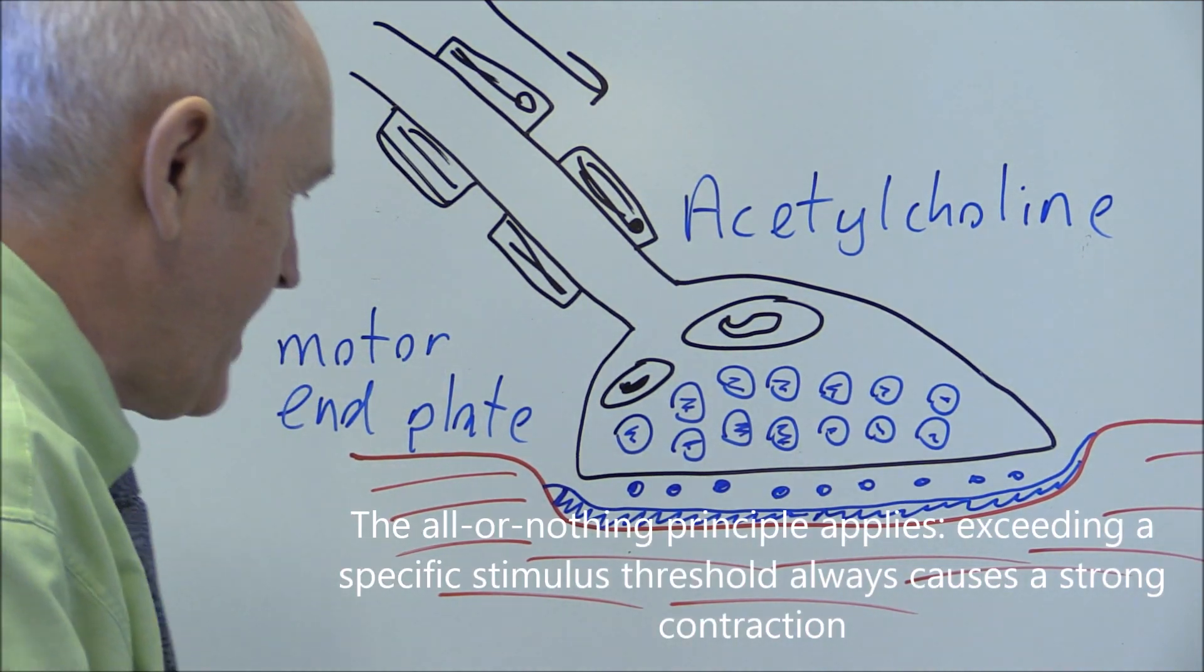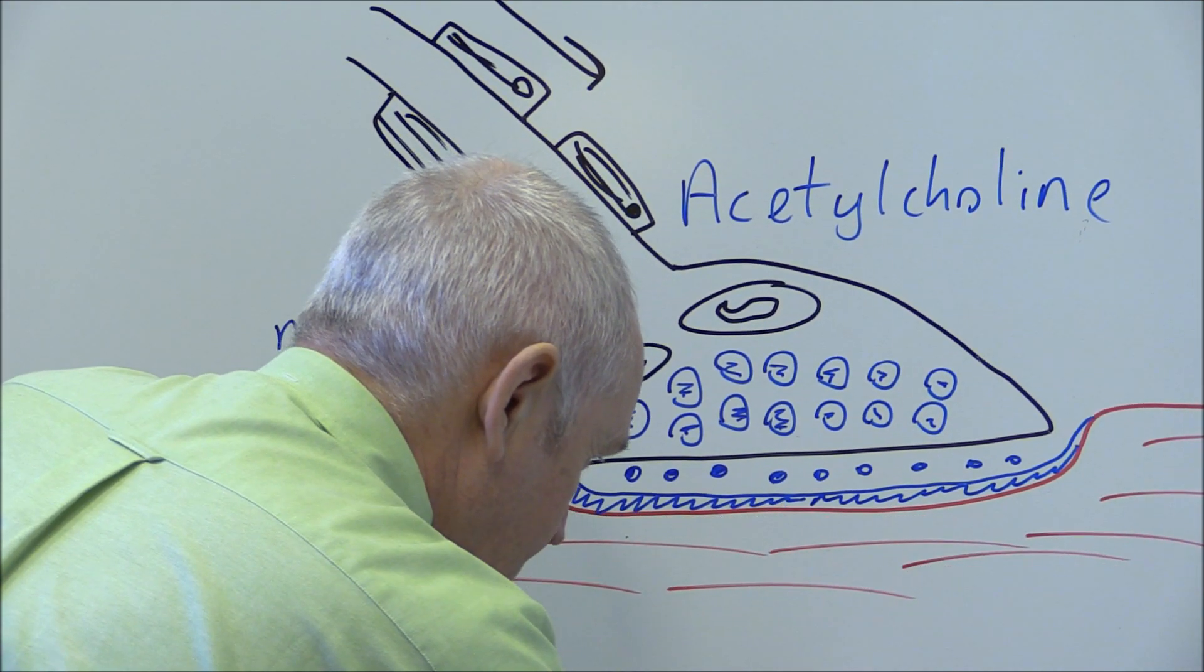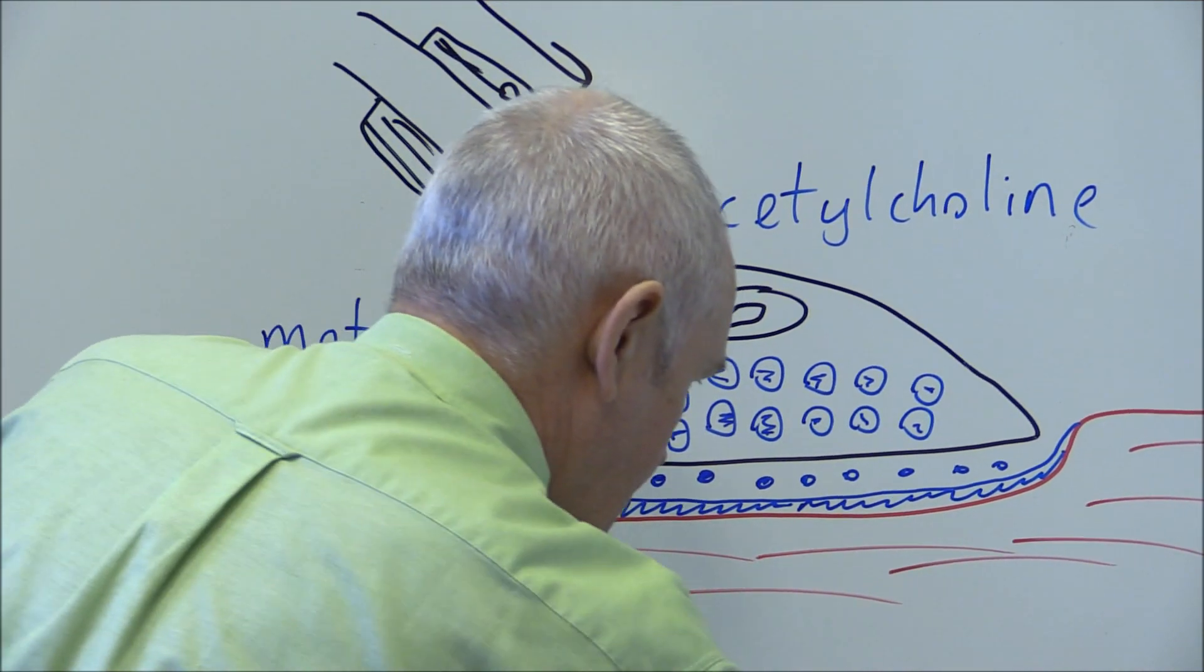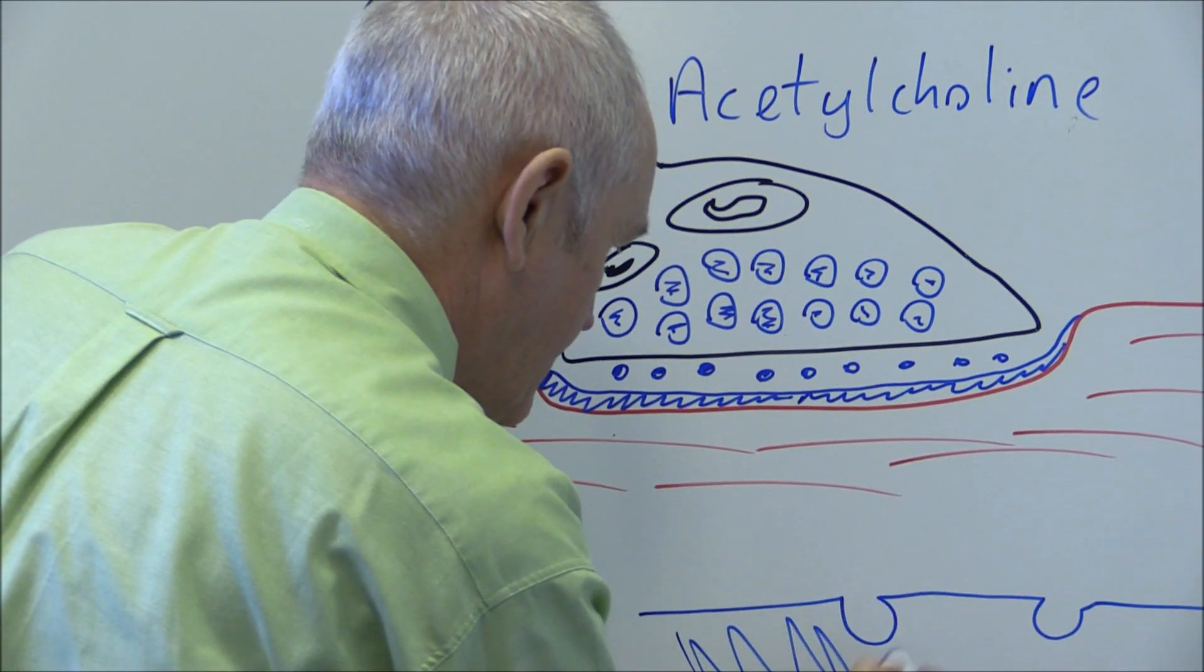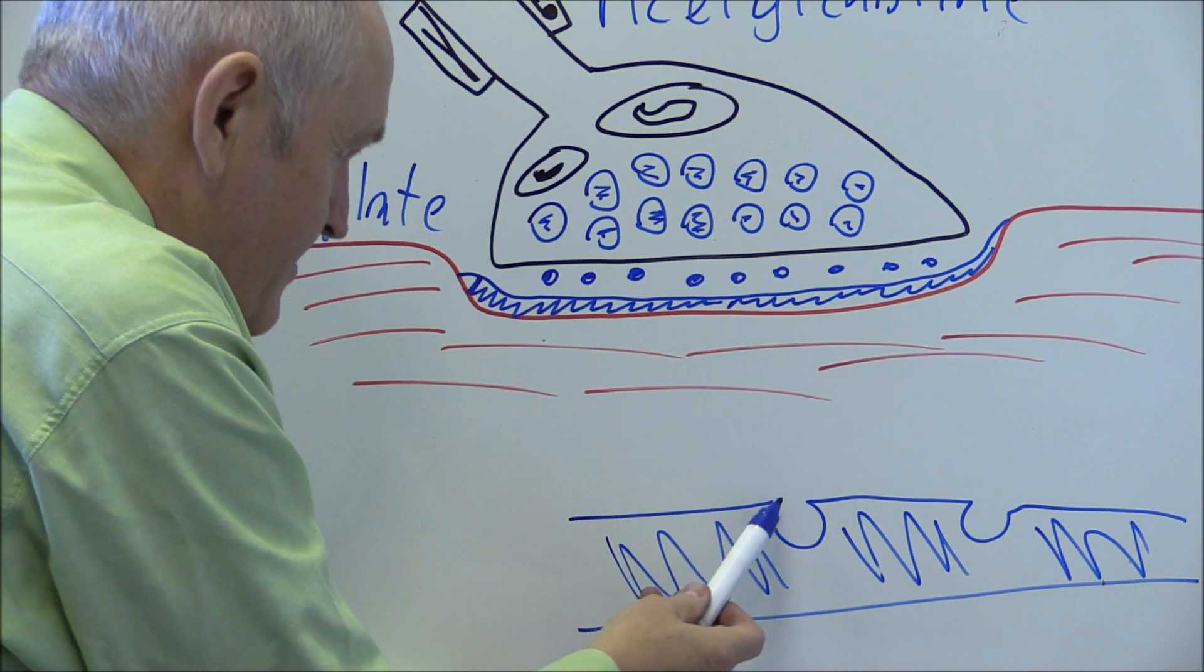So the motor end plate, if we look at it in larger magnification, has got these specific receptor sites. This will be the motor end plate here, containing the receptor sites for the acetylcholine.